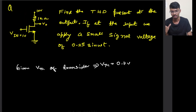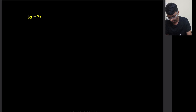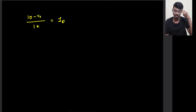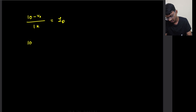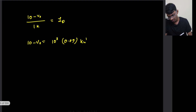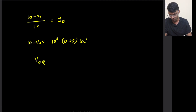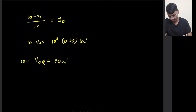Writing the KVL equation at the output node: (10 − V_O) / 1kΩ = I_D. So 10 − V_O = 10³ · 0.09·Kn'. Therefore, V_O_Q = 10 − 90·Kn'. This gives us the quiescent output voltage.